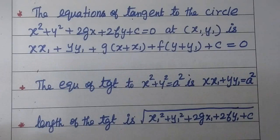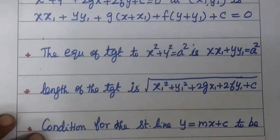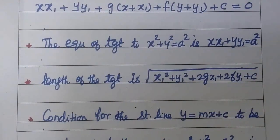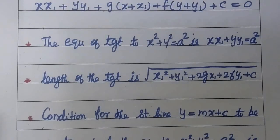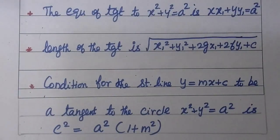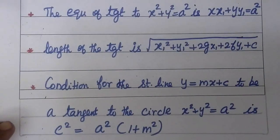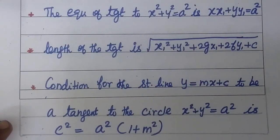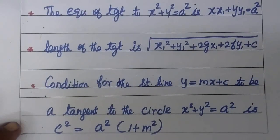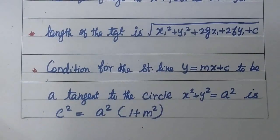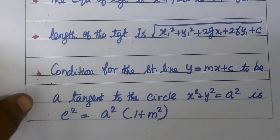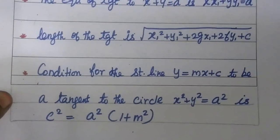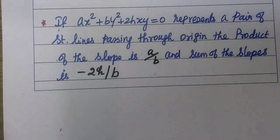So xx1 plus yy1 equal to a squared, where a is the radius of the circle. This is the equation of the tangent for a circle centered at the origin. Then the condition for the straight line y equal to mx plus c to be a tangent to a circle: c squared equal to a squared times (1 plus m squared). This is a well-known formula.